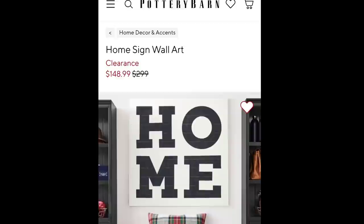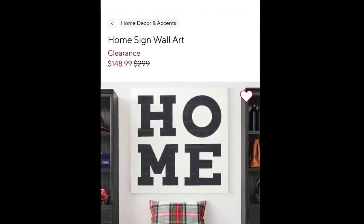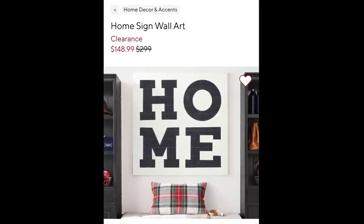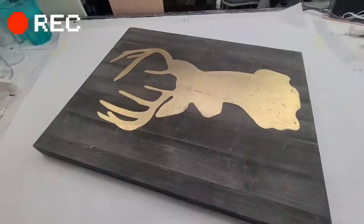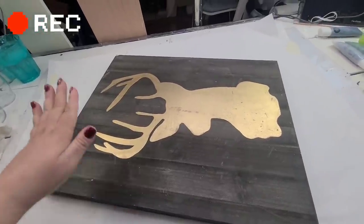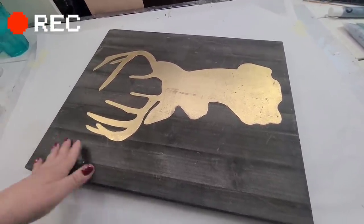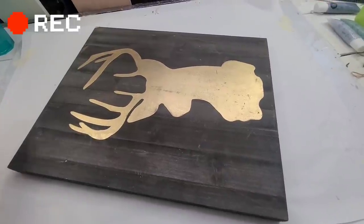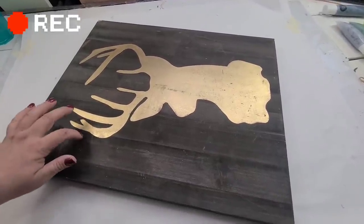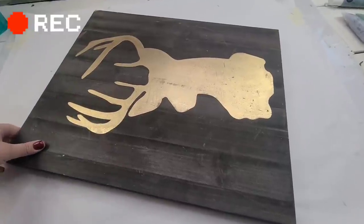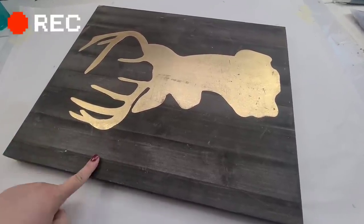For my next inspiration dupe comes from also Pottery Barn. And it's this home wall sign that was $148.99. All right, here we go. So I got this sign at the thrift store. It was $3.99. I grabbed it. It's actually a pretty good size and pretty solid. Although I can tell it's hollow inside, but it just seems a pretty solid piece. So I grabbed it. Now, this is not a vinyl. It looks like maybe they used the vinyl as a stencil and then painted it with like a very sheer metallic gold.